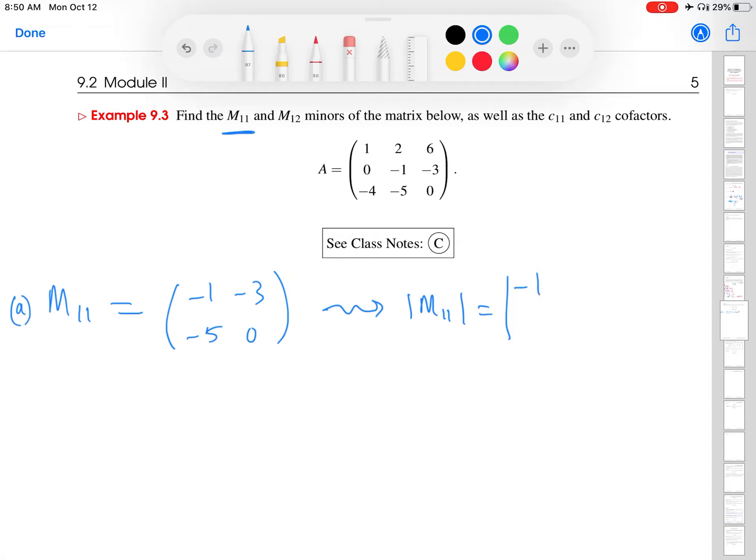And now I want to find the minor. So from here, I'm going to take the determinant of this matrix. So determinant of negative 1, negative 3, negative 5, 0. All right, so I multiply the diagonals, I get 0. Minus multiply what's called the off diagonals, I get negative 3 times negative 5. That's 15. 0 minus 15 is negative 15.